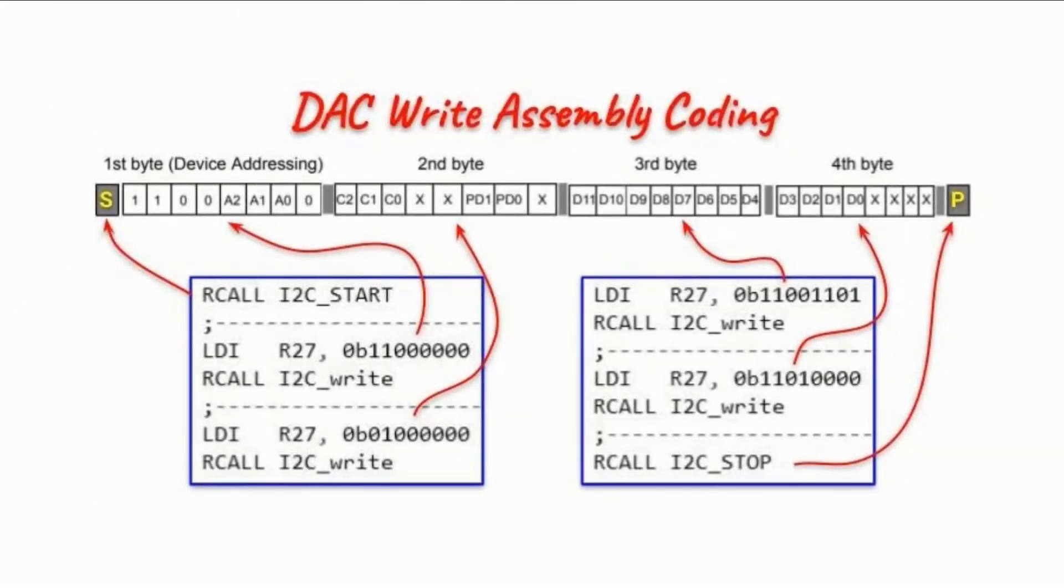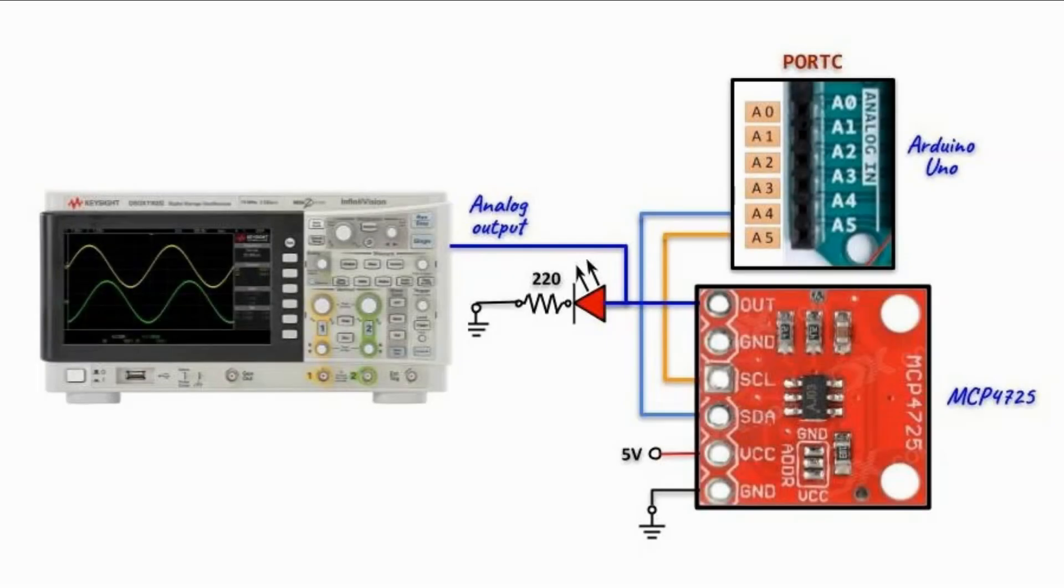And now let's have a look at the assembly code used to perform a DAC write. We begin by sending the start signal, and then we send the first byte, which is the device addressing, and the device address is hexadecimal C0. Then we send the second byte, which is the control byte, containing the configuration bits. The control bits are 010, meaning that we are writing to the DAC register only. And the power down bits are 00, meaning that the power down mode is off, and we are in the normal mode. Next we send the third byte, which is the bits D4 to D11 of the 12-bit data. And then we send the remainder of the bits from D0 to D3. And then we end the transmission by sending the stop pulse.